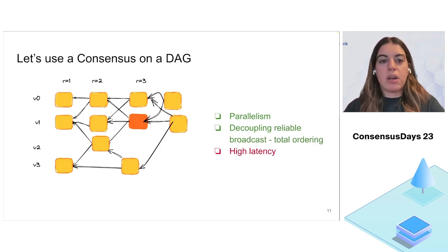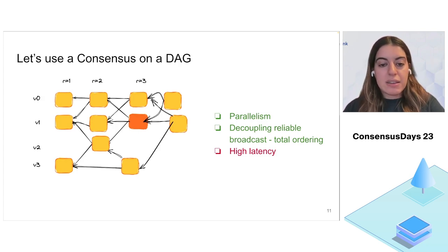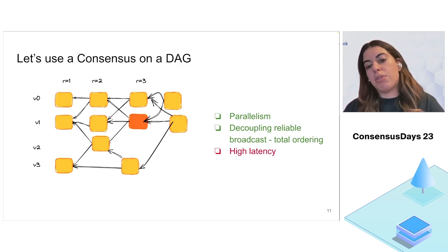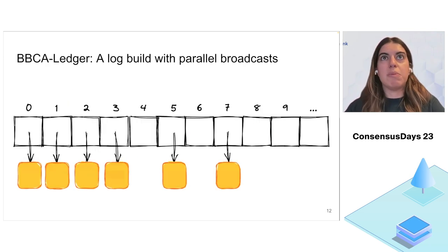The drawback of consensus on DAG is latency. We saw yesterday in Alberto's talk that the Sui protocol, for example, tries to avoid consensus decisions as much as possible because compared to consistent broadcast, they suffer much higher latency. This is because they always need to wait a few rounds until the leader block is committed to commit all the uncommitted previous blocks. We asked ourselves, what if we could build a total order of consistently broadcast blocks without a leader? This is what we tried to do with Babka Ledger.